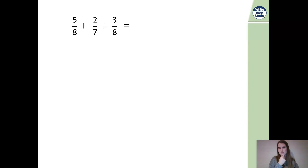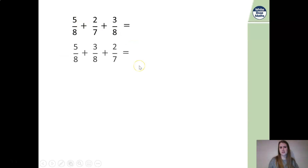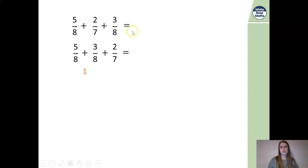No, we don't. Let's rewrite it. We've got the five-eighths and the three-eighths. If we add five and three together, that gives us one whole. I don't need a denominator if it's a whole number. So, all I need to do is then add two-sevenths. My answer there gives me one and two-sevenths. Easy peasy.